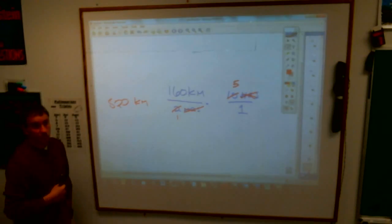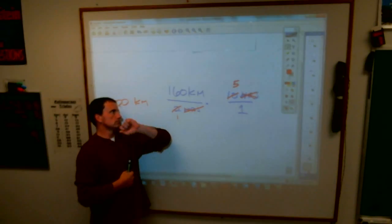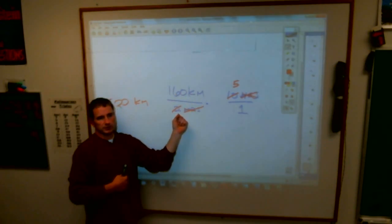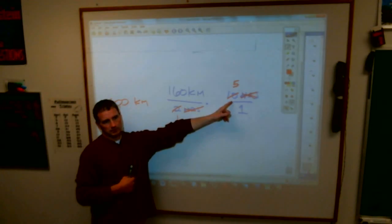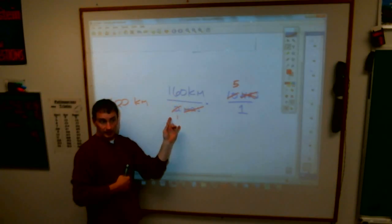And that would, if I asked you to write a story problem that dealt with that, you'd say, well, if Bob traveled on his snowmobile 160 kilometers in two hours, how far did he go? Would he go in 10 hours? Then 160 over 2, which is the same thing as 80 kilometers per hour, right?